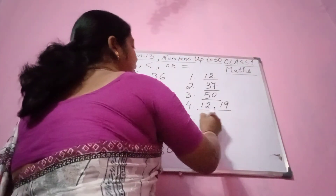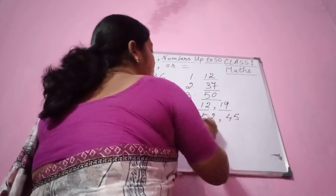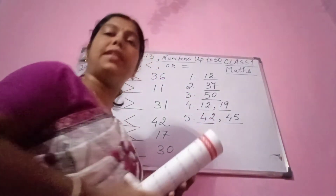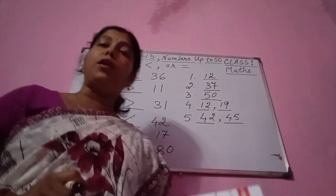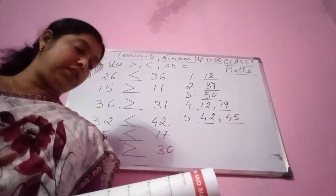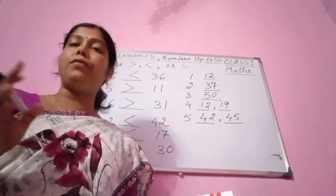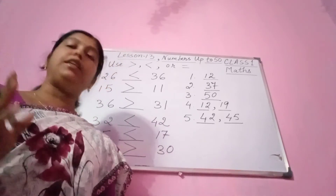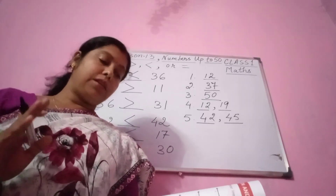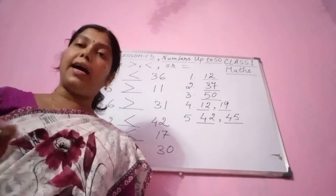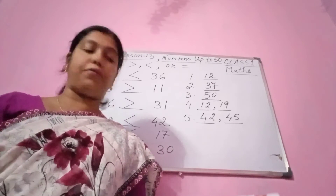Please see in the wheel — 42 and 45. Recap: which is the smallest number? 12. Which number is less than 40 and more than 35? 37. Which is the greatest number? 50. Which numbers are between 10 and 20? 12 and 19. Which numbers are between 40 and 50? 42 and 45.